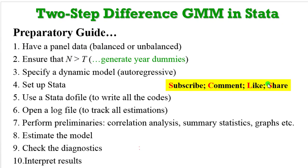Whether you are writing a manuscript or working on your dissertation, on the screen is a 10-point guide to help you. Make sure you have panel data — balanced or unbalanced. Ensure the number of cross-sections is greater than the number of time dimensions. Generate year dummies, specify a dynamic model, set up data for panel estimation, have your do file and log file ready, perform preliminaries, estimate the model, check diagnostics, and finally interpret your results.